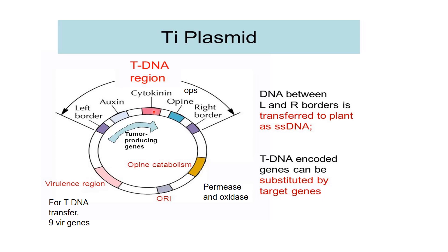Cytokinin genes and auxin genes are also present in the T-DNA region. The cancer is produced by these auxin and cytokinin genes, which are used in the activation of cells. Opine catabolism genes are mainly used for the degradation of opines, and these enzymes are produced by permeases and oxidases.